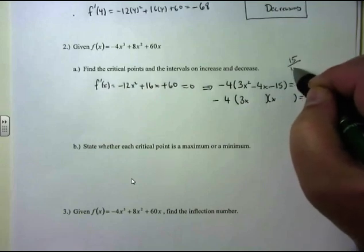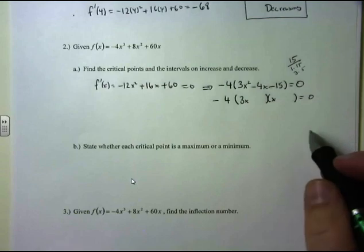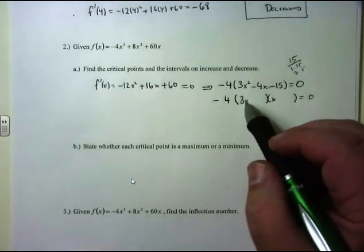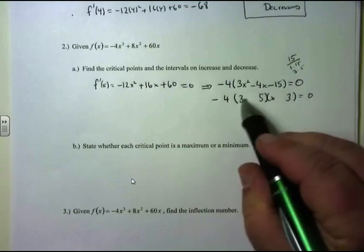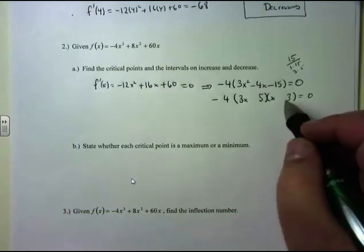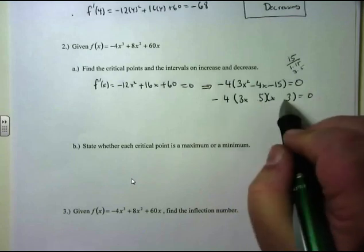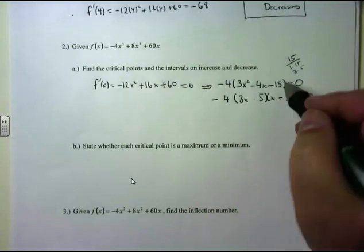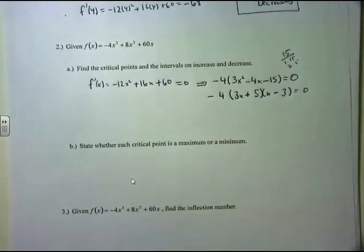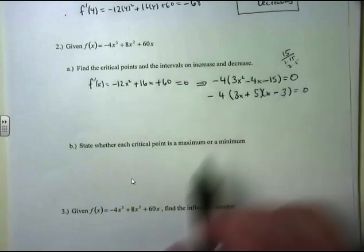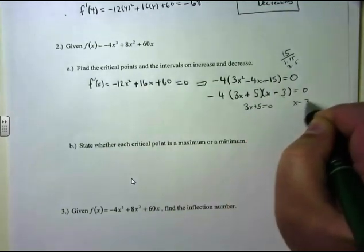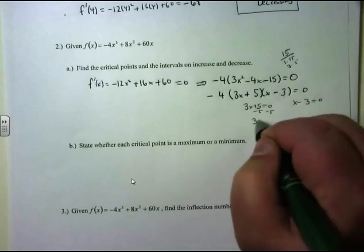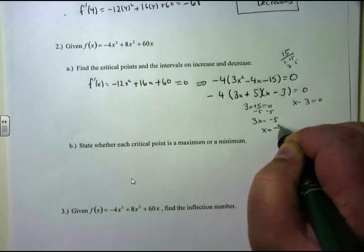What are my signs? I've got a minus, so one factor is plus and one is minus. I want the bigger number to be minus. So the factored form is -4(3x + 5)(x - 3) = 0. To find my critical numbers: set each factor with x equal to 0. From 3x + 5 = 0, I get x = -5/3. From x - 3 = 0, I get x = 3.